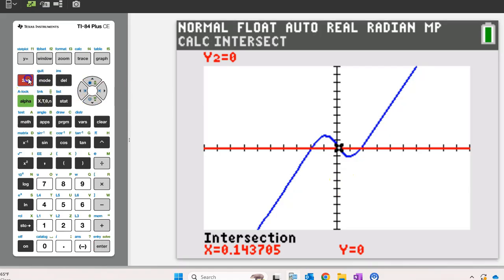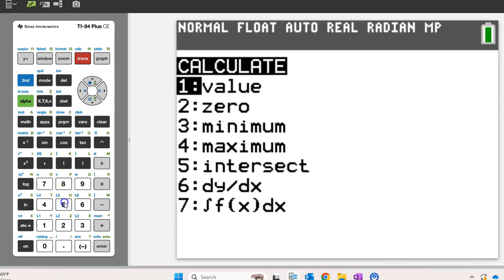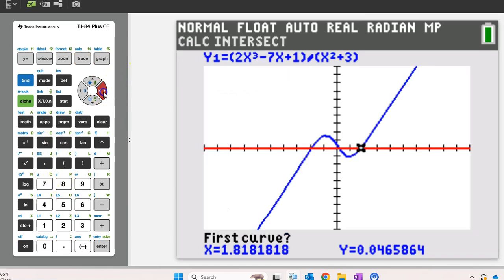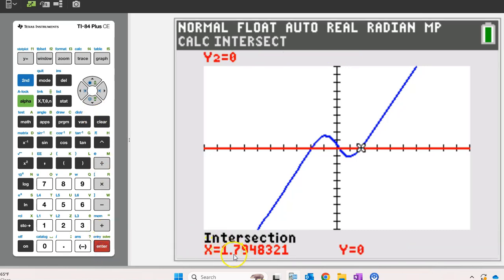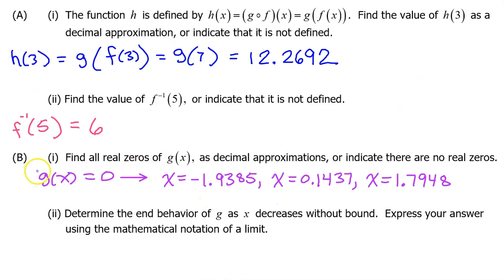And one more time, second trace 5. Move to the third intersection point and hit enter three times, 1.7948. That's it for B part 1.